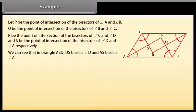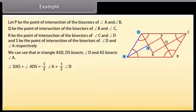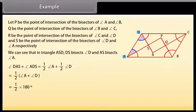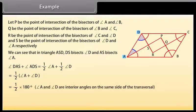In triangle ASD: DS bisects angle D and AS bisects angle A. Therefore angle DAS + angle ADS = ½ angle A + ½ angle D = ½(angle A + angle D) = ½ × 180 degrees, because angle A and angle D are interior angles on the same side of the transversal.